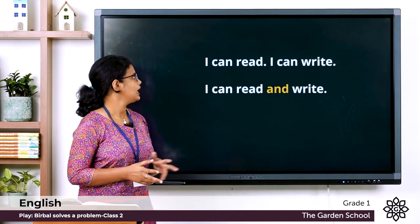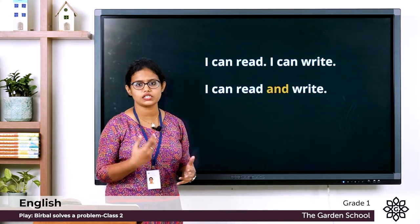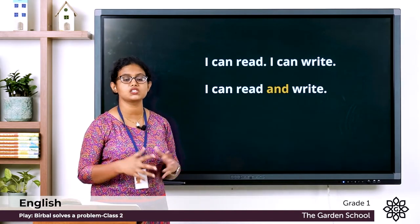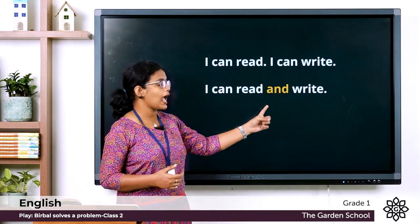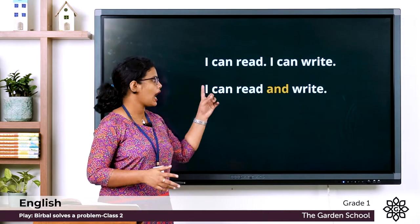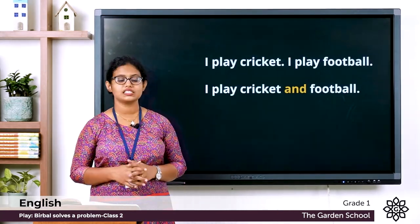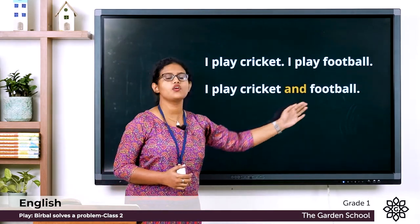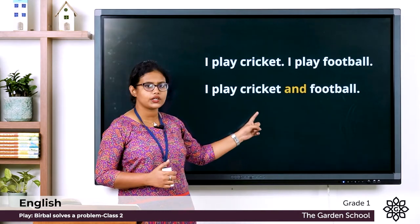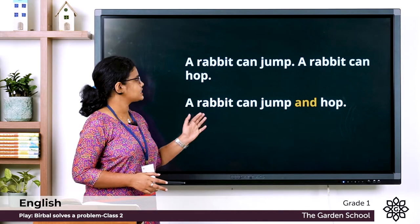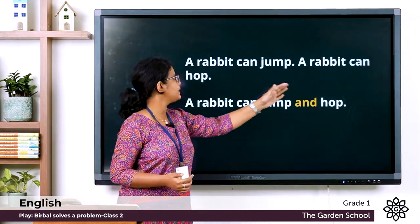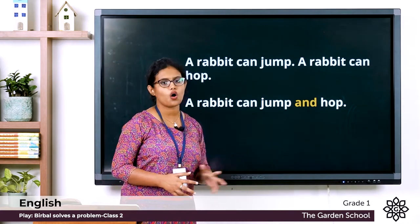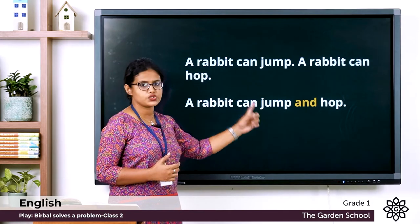Let's see more examples. 'I can read' and 'I can write' — two sentences. Join them using 'and': I can read and write. Next: 'I play cricket' and 'I play football' — you can write it as: I play cricket and football. The joining word is 'and'. One more: 'A rabbit can jump' and 'A rabbit can hop' — joined as: A rabbit can jump and hop. The joining word used is 'and'.